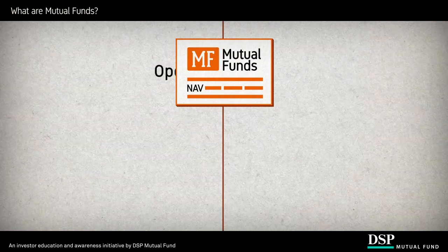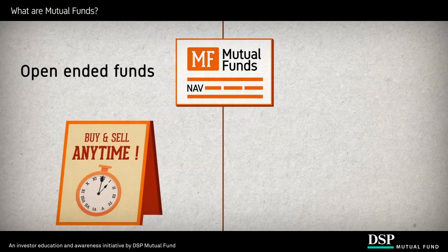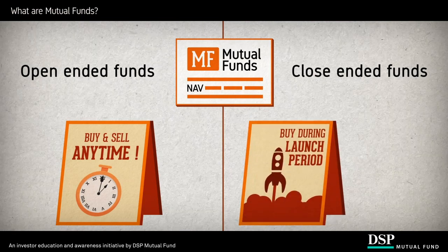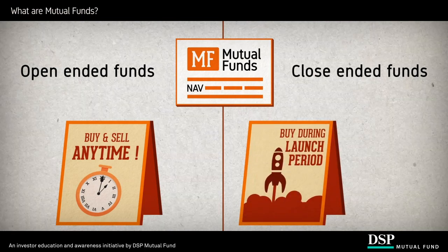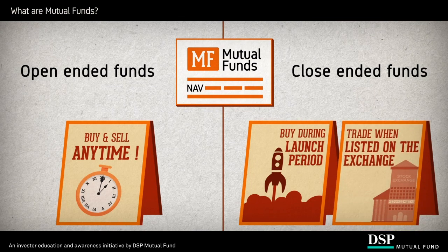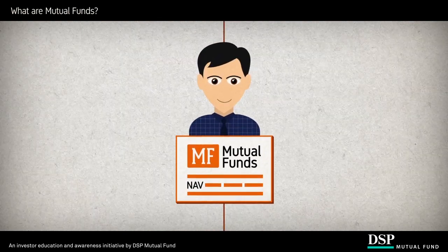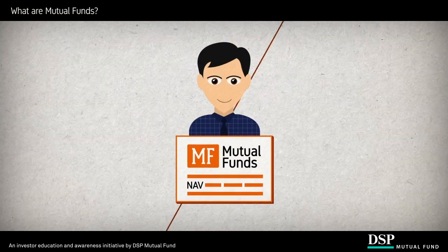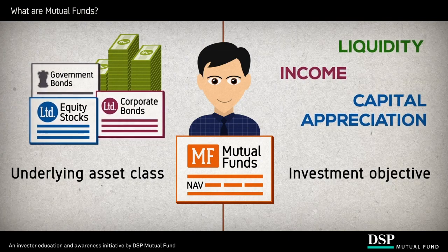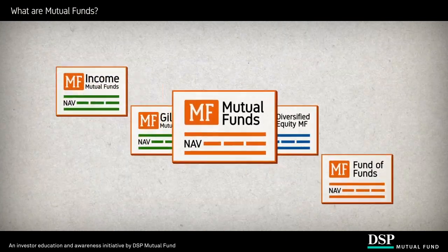Mutual funds are primarily classified as open-ended funds, where you can buy and sell units at any point in time, or close-ended funds, where you can buy only in the launch period, after which the units are listed only on the stock exchange for you to buy and sell. You can also choose a mutual fund based on the underlying asset class and the investment objective of the fund.